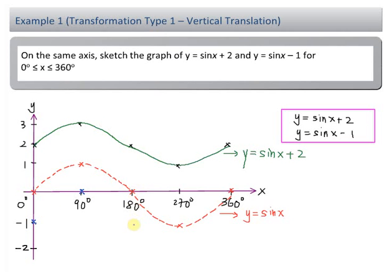Zero minus 1, you have negative 1. Negative 1, shift down 1 unit, you have negative 2. And 0 shift down 1 unit, you have negative 1. Now this blue curve here represents y = sin x - 1. Every point here is shifted down by 1.